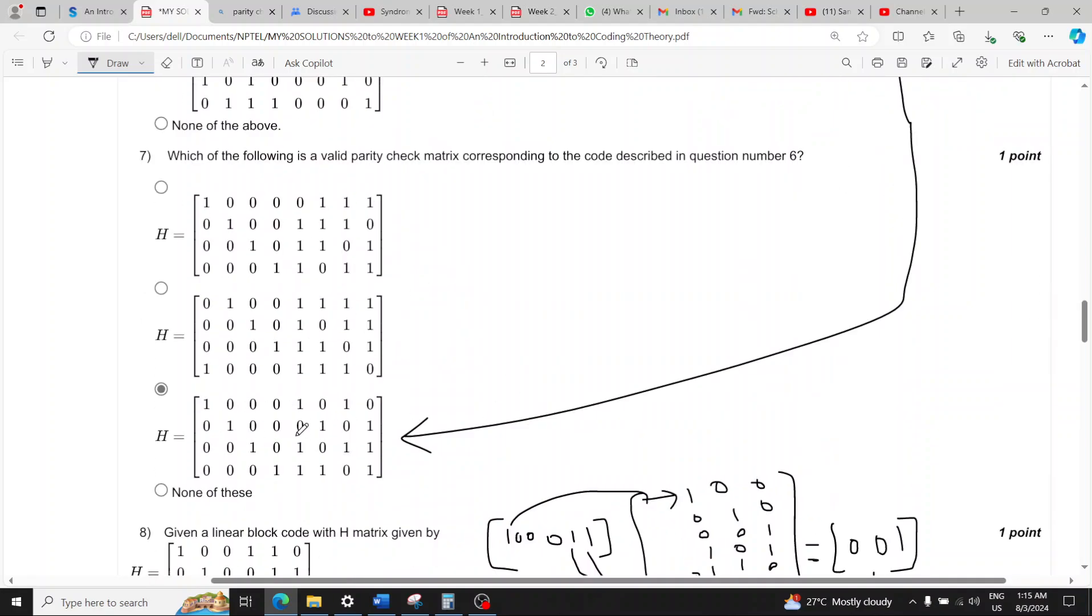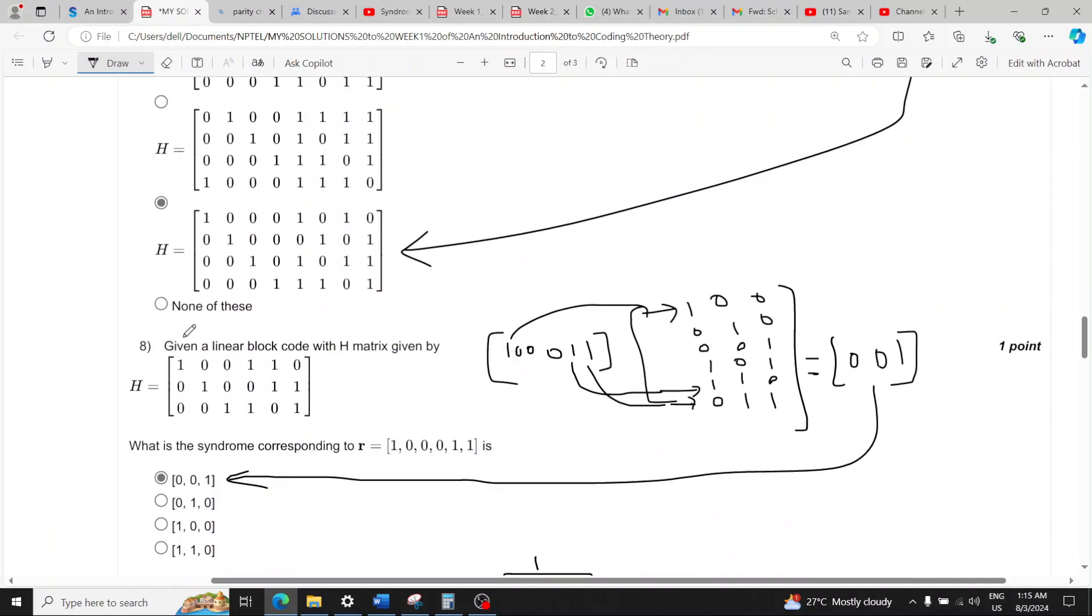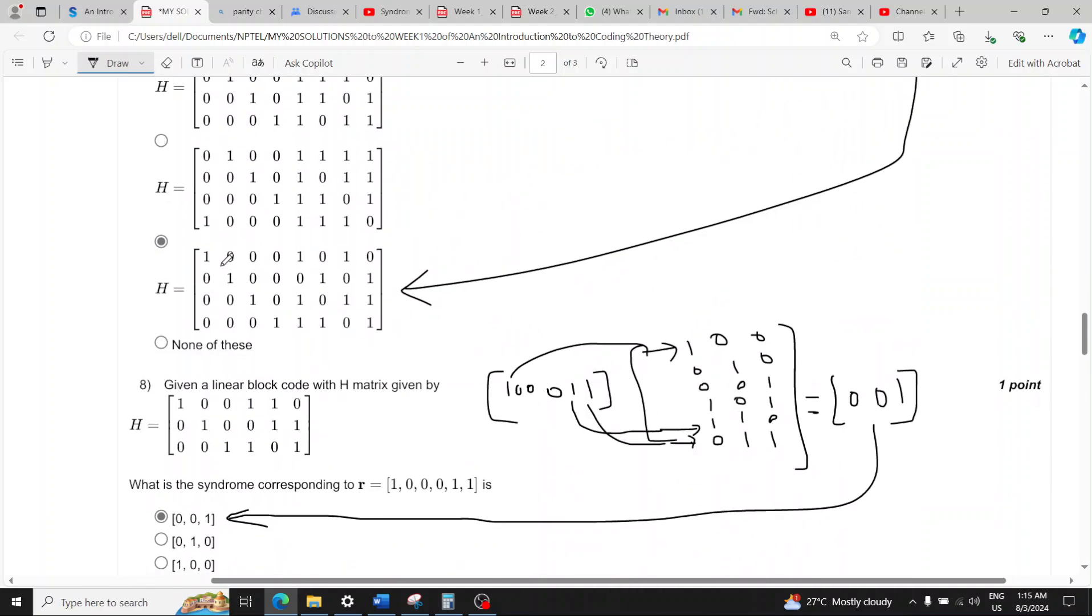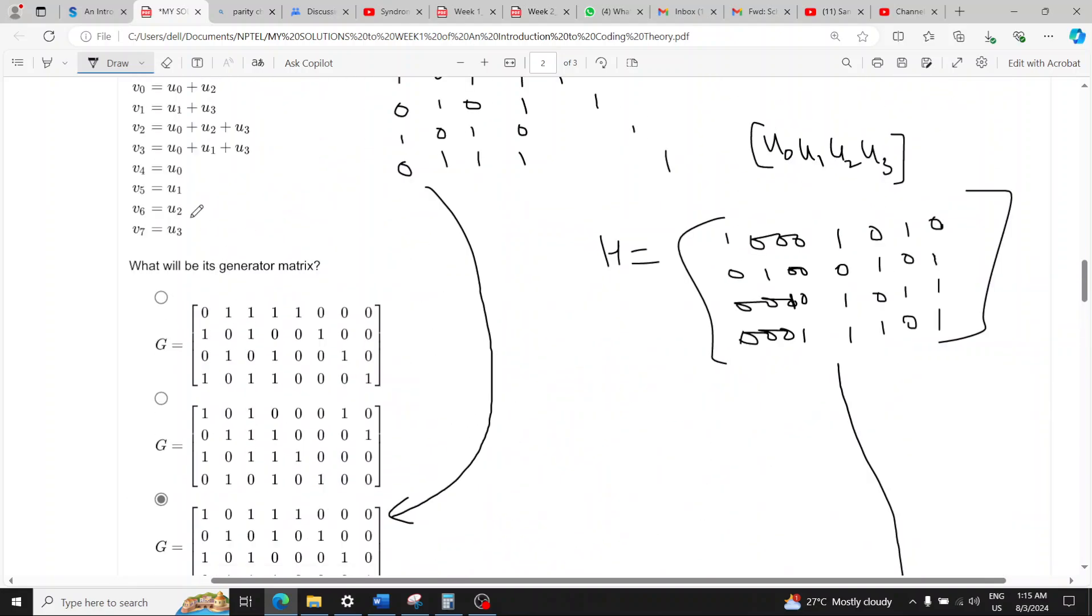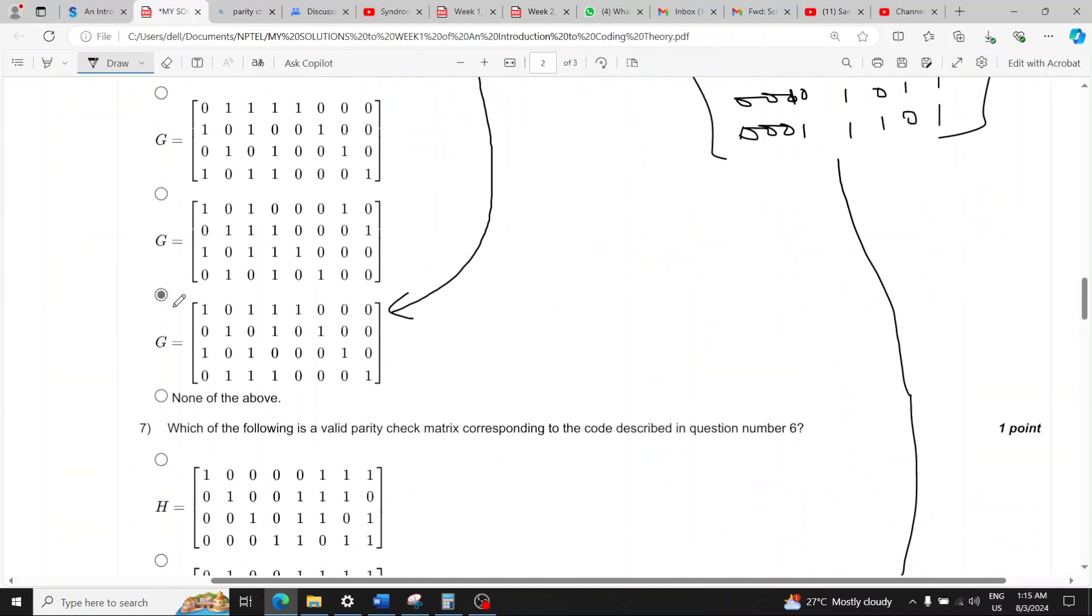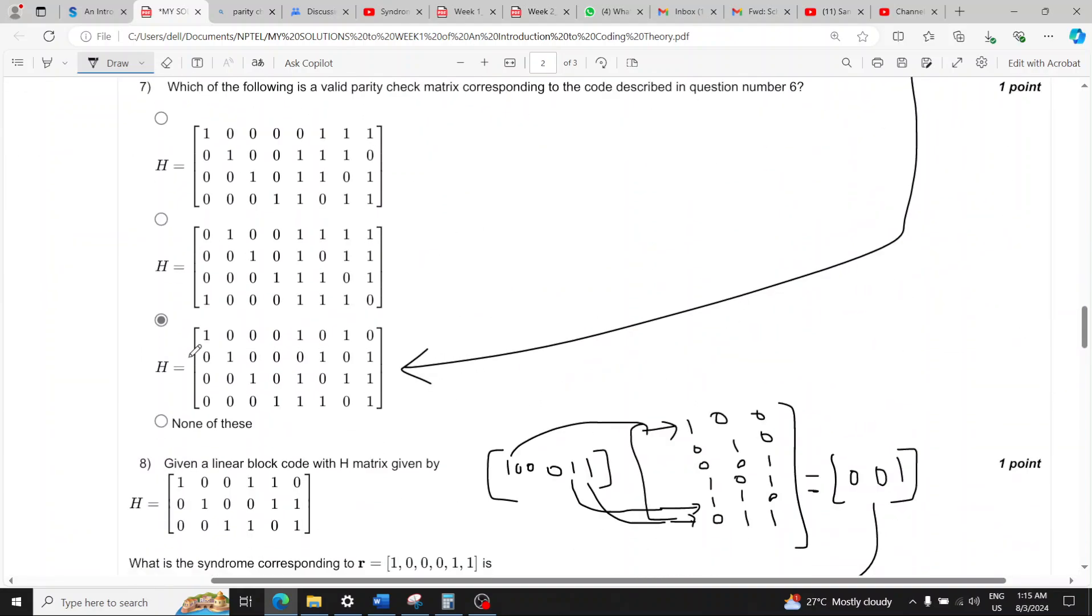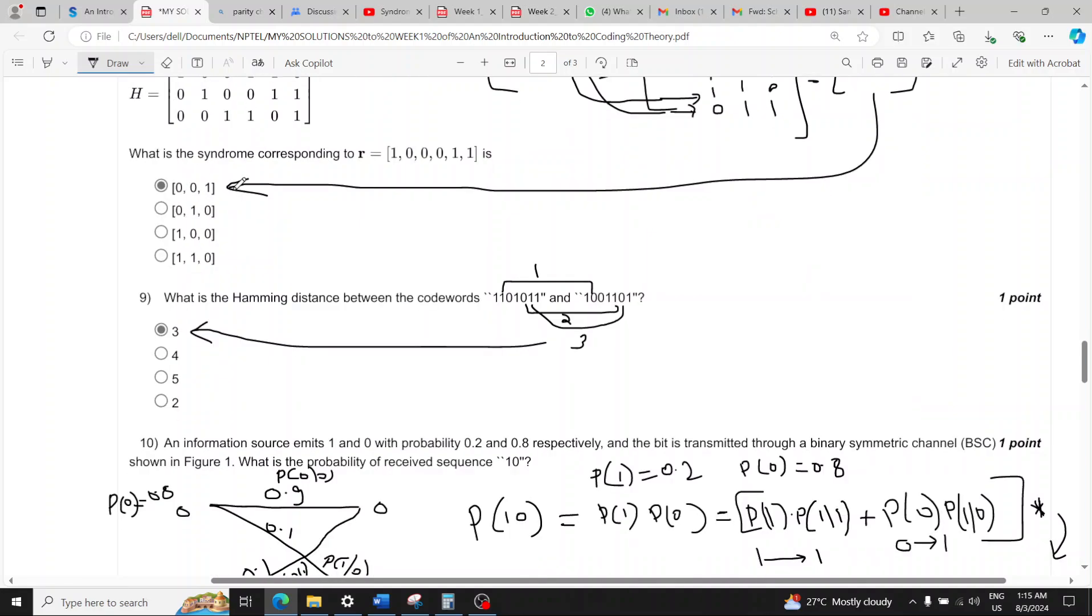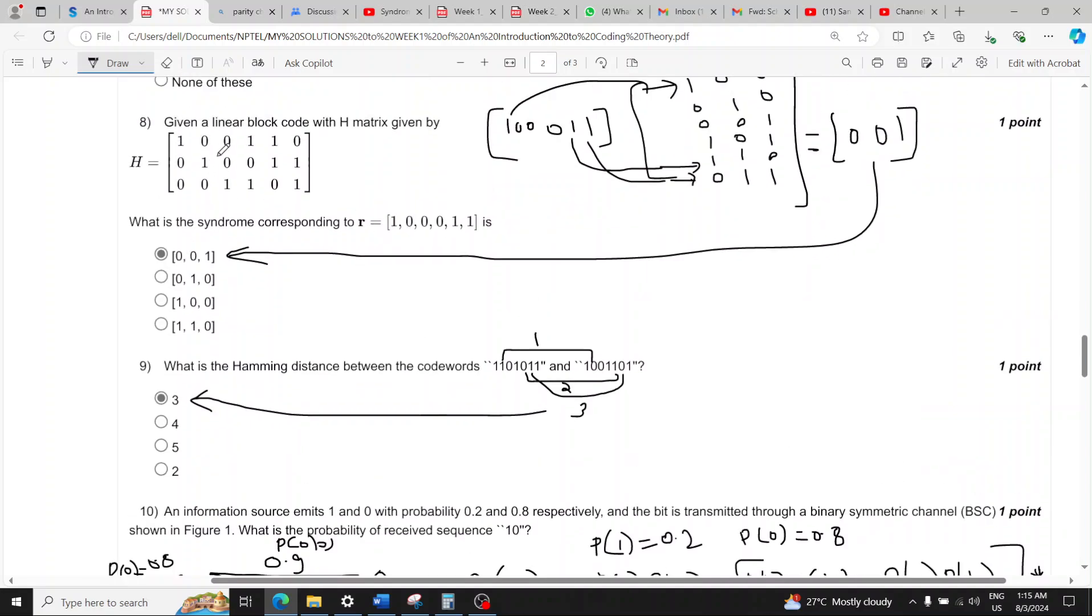So question seven has answer last option where H transpose is the answer which is option three. Similarly in question six, question number six answer is option C again. And in question eight syndrome is to be found. You just multiply these two out, you will get option A as answer.